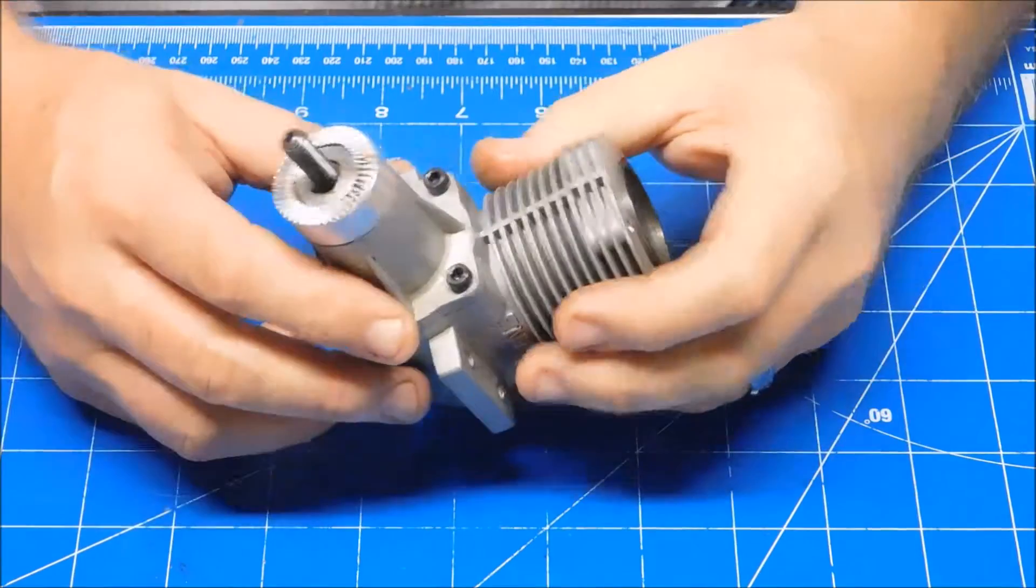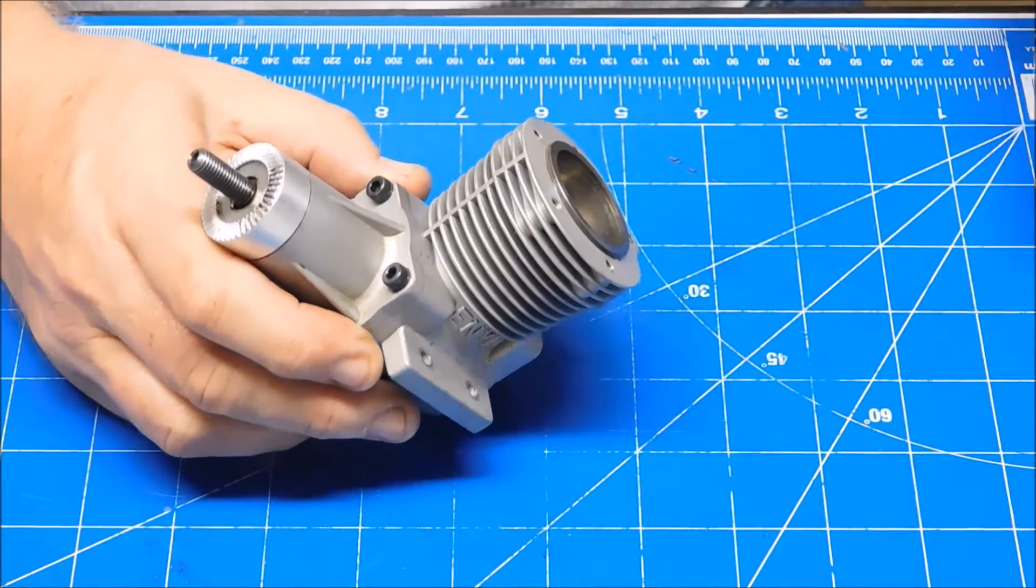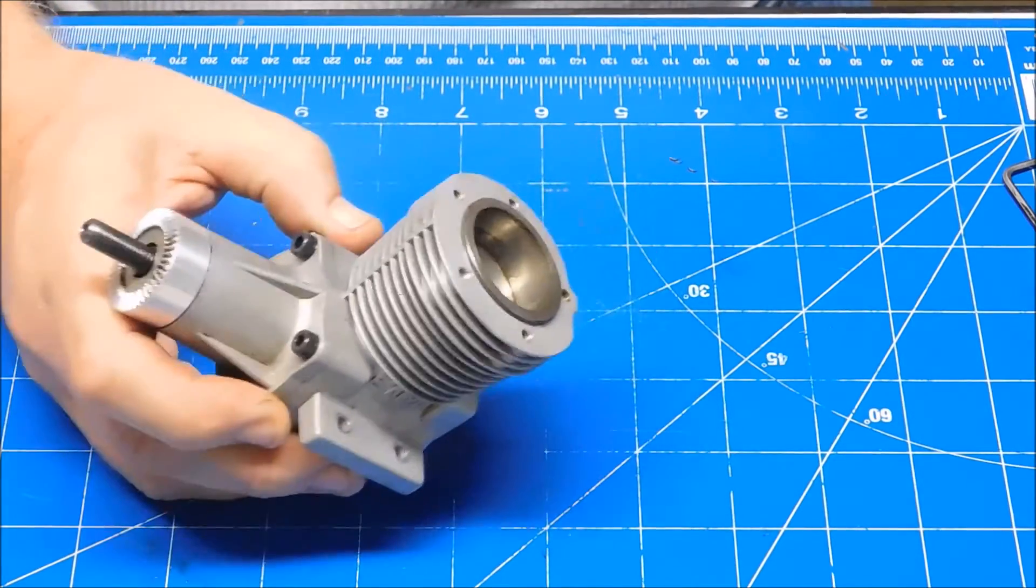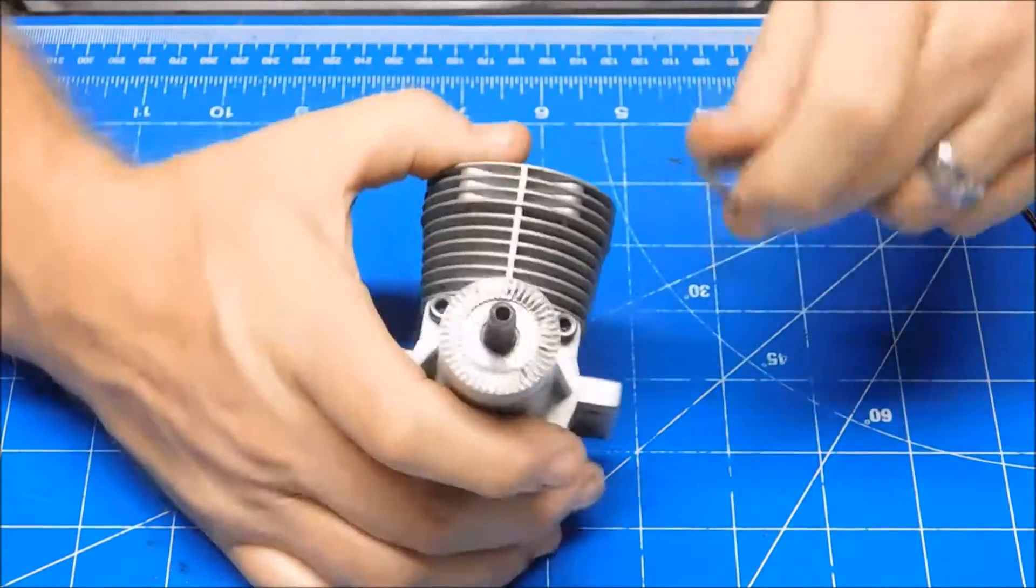Let's finish tearing this thing down. Next is to take the front bell off here, the front end.